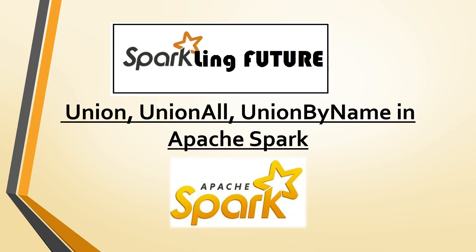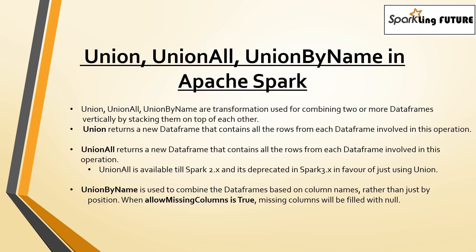Welcome to Sparkling Future in the Spark interview question series. Let's see the differences between union, union all, and union by name in Apache Spark. All three transformations are used for combining two or more data frames by stacking them on top of each other. Union returns a new data frame containing all the rows from each data frame involved, and this will not remove duplicates — unlike SQL union, which usually removes duplicates.